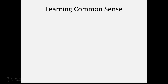One question is where do we gather this common sense knowledge from? One good response is to use all the text on the web — every book that's been written — to learn this common sense knowledge about how the world works. But text suffers from reporting bias. Text is written by humans to communicate with other humans, and we don't like talking about boring, mundane, common sense stuff — we prefer talking about unusual and interesting things. As a result, text is particularly bad for learning mundane knowledge about how the world works.